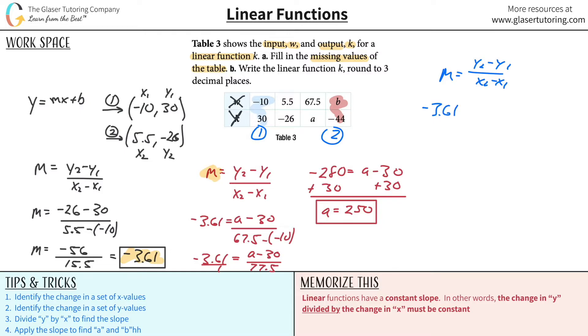The slope is negative 3.61. I'm going to use the exact value. The y2 value is negative 44, minus the y1 value of 30, all divided then by the x2 value, which is B, minus then the x1 value, which is negative 10. So just be careful with that double negative. Let's simplify. So it's negative 3.61 equals negative 74 divided by B plus 10. Let's cross multiply. So it's going to be negative 3.61 multiplied by B plus 10, and then it's just negative 74. Now we can distribute.